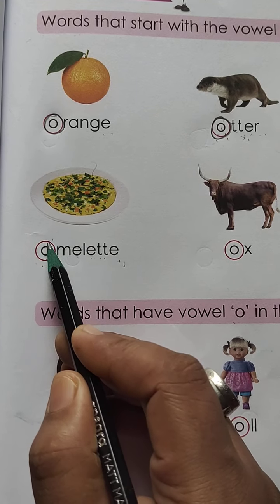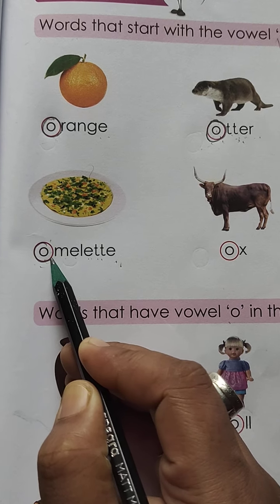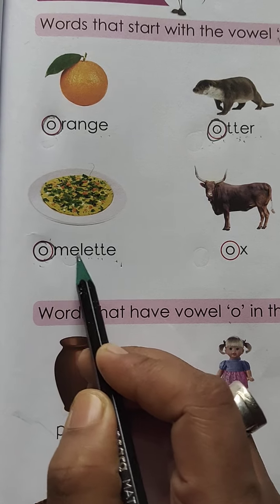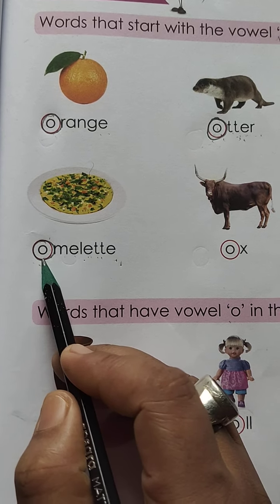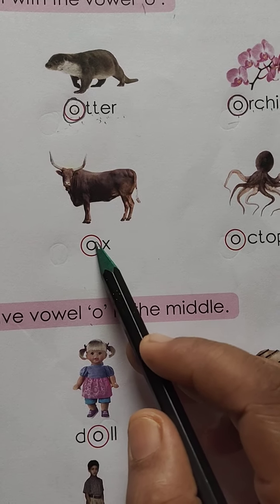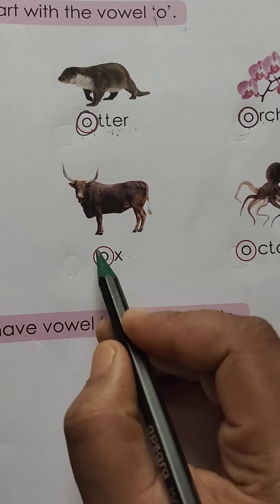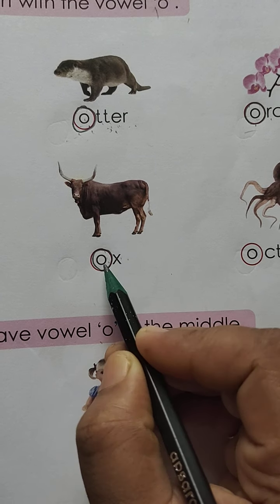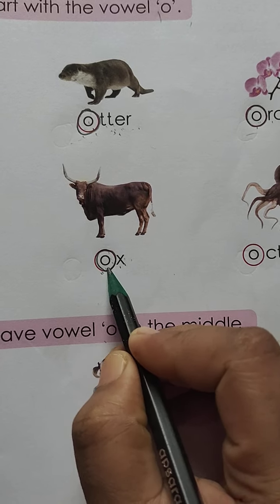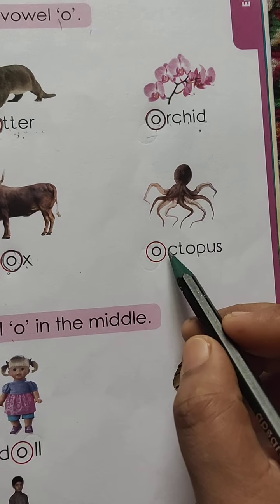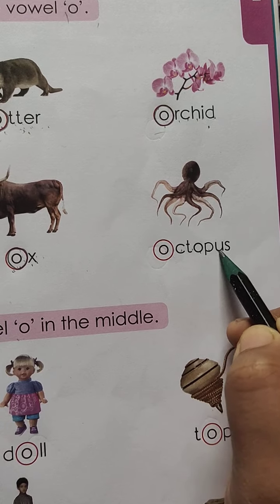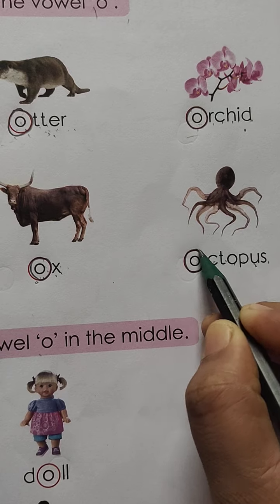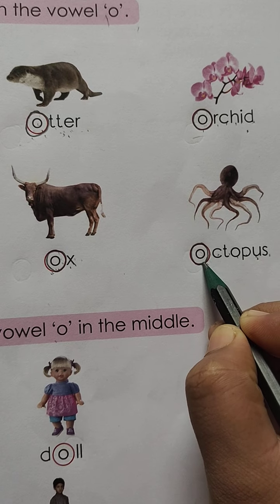Students, here also the first letter of this word is vowel O. O X — ox. You can see O is the first letter of this word, so circle the vowel O. Octopus — O C T O P U S — octopus. Vowel O is the first letter, so circle the vowel O.